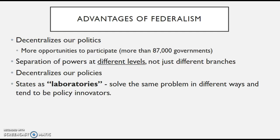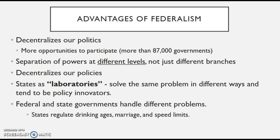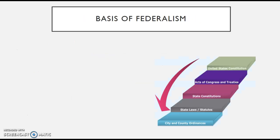Federalism also decentralizes our policies. States act as laboratories — they solve the same problem in different ways and tend to be policy innovators. States experiment with something, and if it works out well, they'll share it with the other 49 states. Federal and state governments also handle different problems in terms of regulating drinking ages, marriage, speed limits, and education. These are some good advantages of federalism.